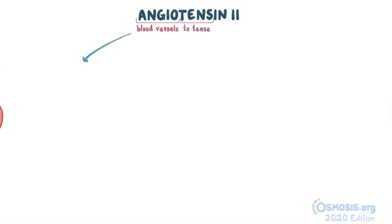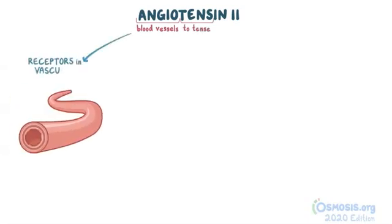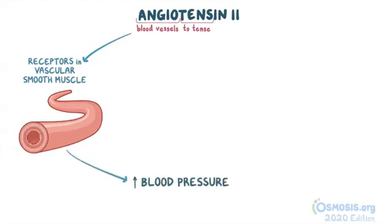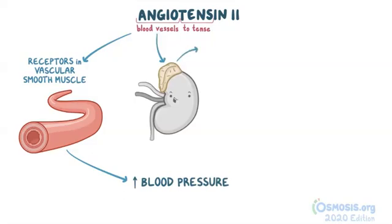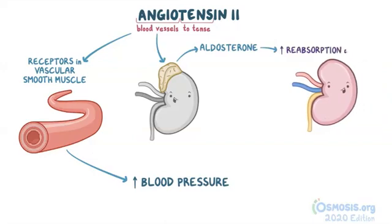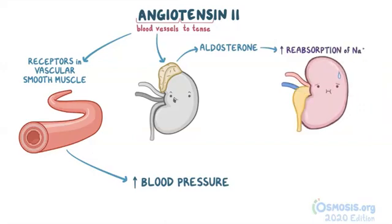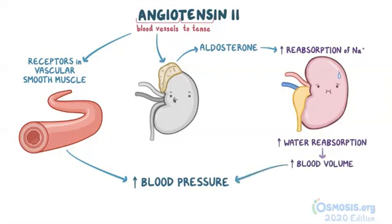Angiotensin 2 binds to receptors in vascular smooth muscle and causes them to constrict, which increases blood pressure. Angiotensin 2 also stimulates the release of aldosterone by the adrenal glands. Aldosterone increases reabsorption of sodium in the kidneys, which also increases water reabsorption. This results in increased blood volume, which also increases blood pressure.